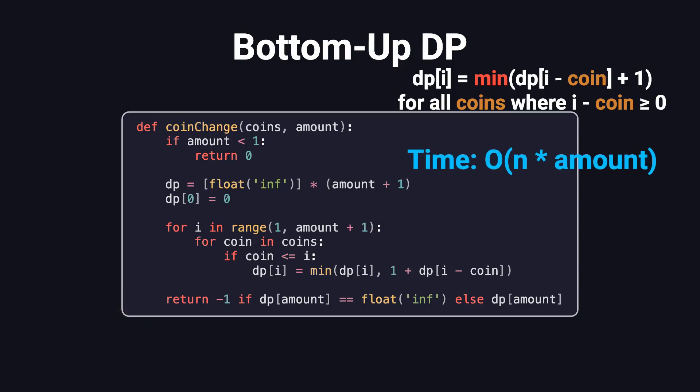The time complexity is O(n times amount), where n is the number of coin denominations. And the space complexity is O(amount). Pretty efficient.